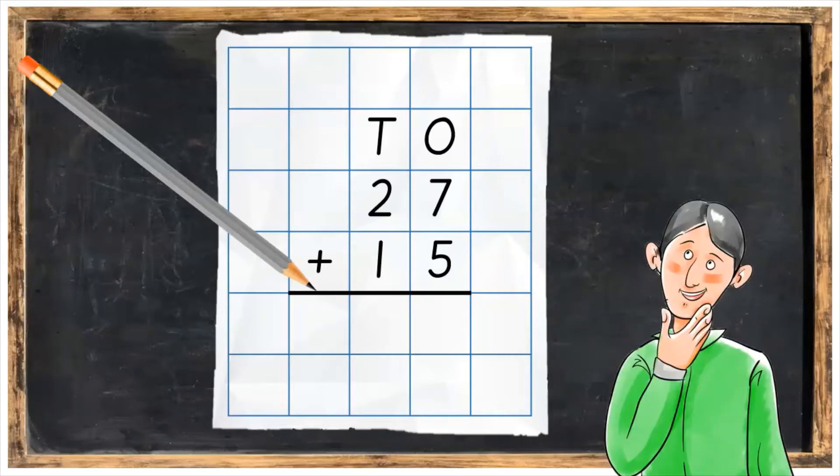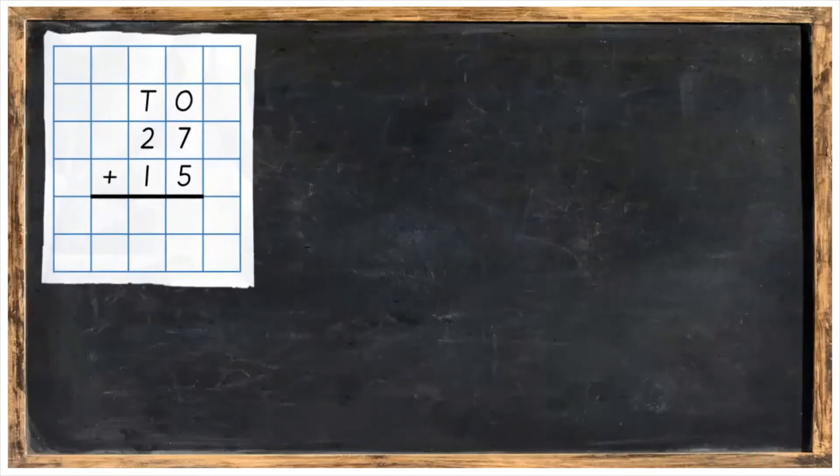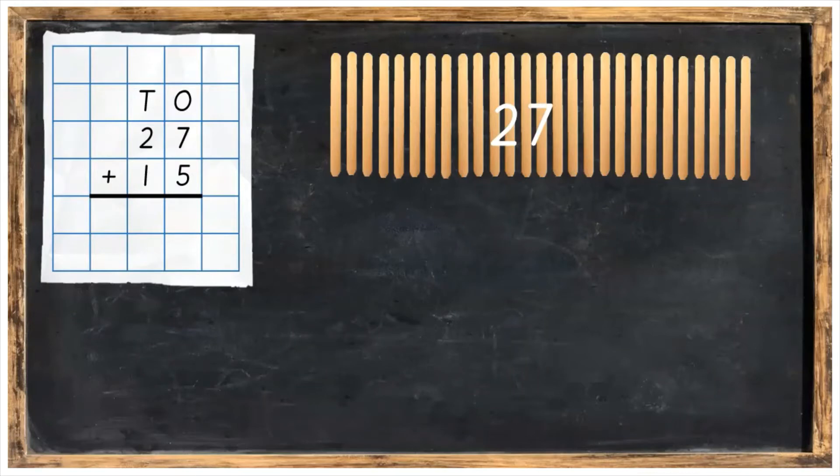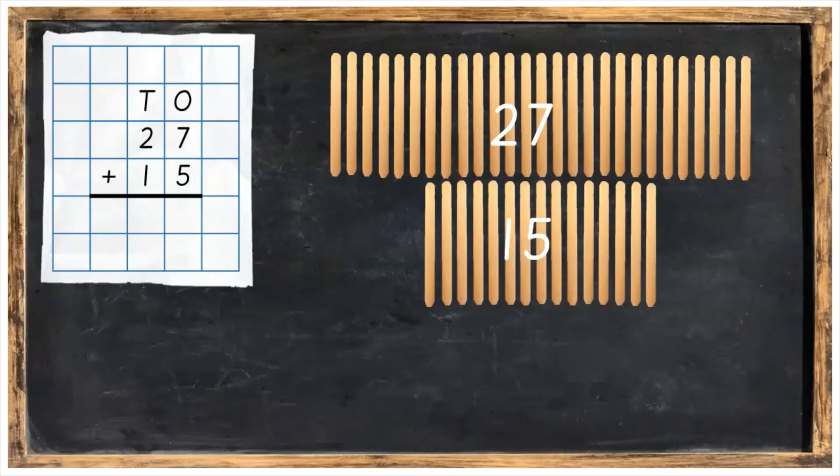So how are we going to do this sum? Well, let's start by laying out our lollipop sticks. So we're going to have 27 on top and then 15 underneath it. And then we're going to bundle the lollipop sticks into tens and ones.